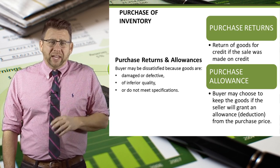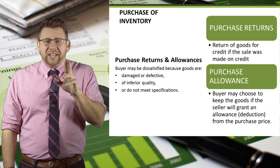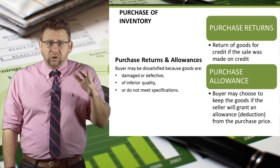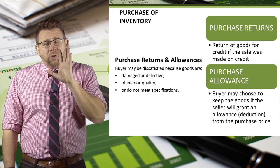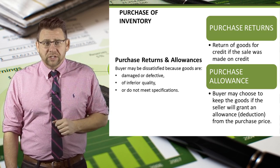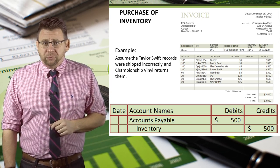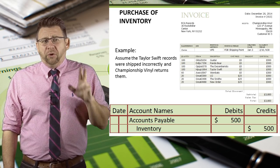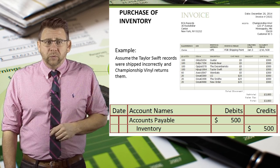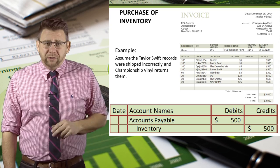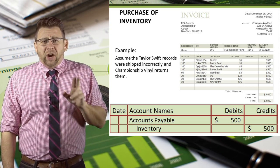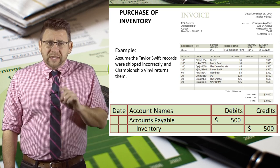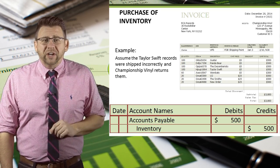Have any of you ever shopped at a scratch and dent section of a furniture store? This is a result of purchase allowances — the cost of goods was reduced because they were damaged, and therefore the price to the customer has been reduced in order to sell the goods. In this example, let's assume the Taylor Swift records were shipped incorrectly and Championship Vinyl returns them. This is just a reversal of our purchase journal entry: we debit accounts payable and credit inventory for $500. Since we are returning the goods, we are reducing inventory with the credit, and the amount we owe is also decreasing. This would be the same journal entry if it were just an allowance.